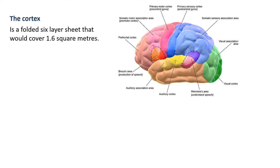In terms of the brain, we have the forebrain - the cortex and the limbic system. The cortex itself is a folded six-layer sheet. If you took it out and opened it all out, it would cover about 1.6 square metres. It forms these folds with creases and lumps - a crease is called a sulcus, and one of the lumps is a gyrus.